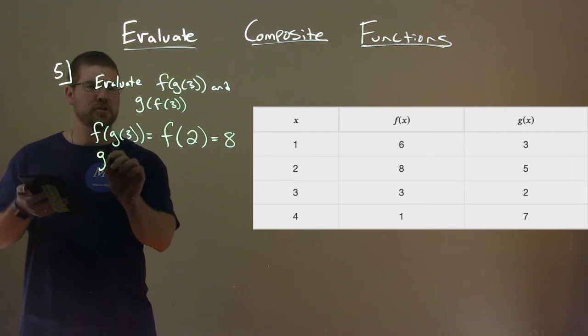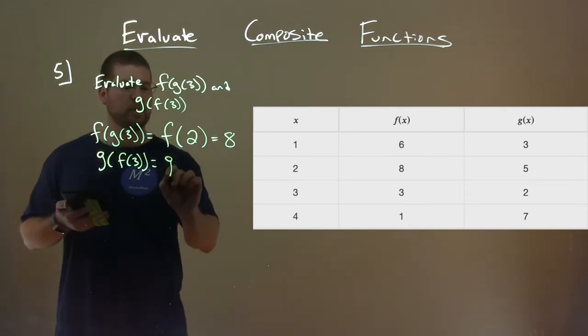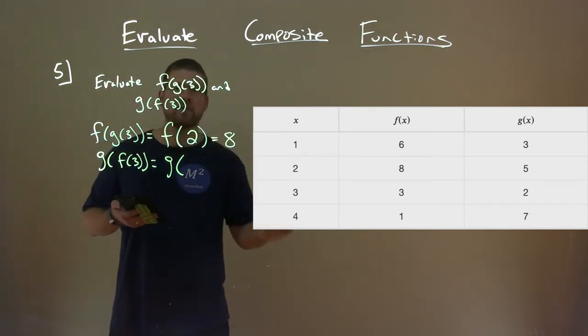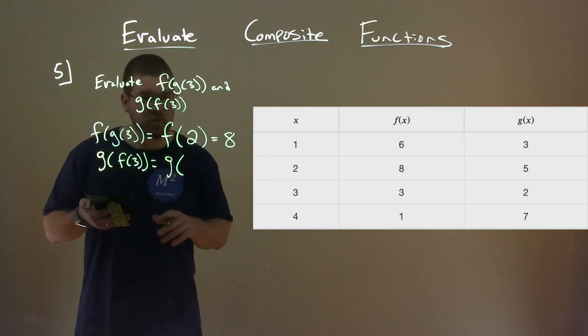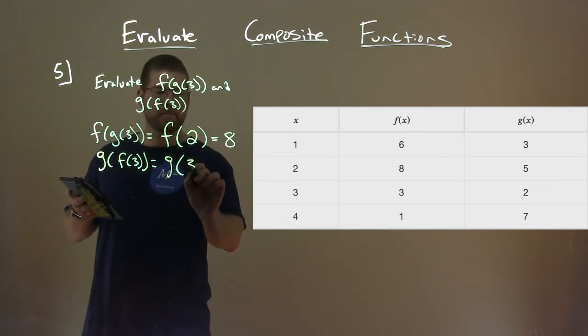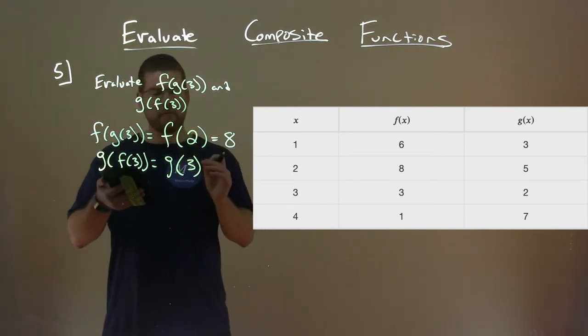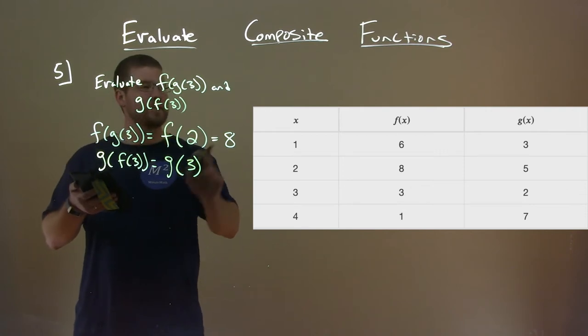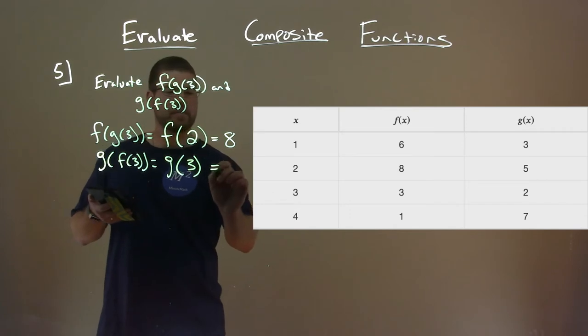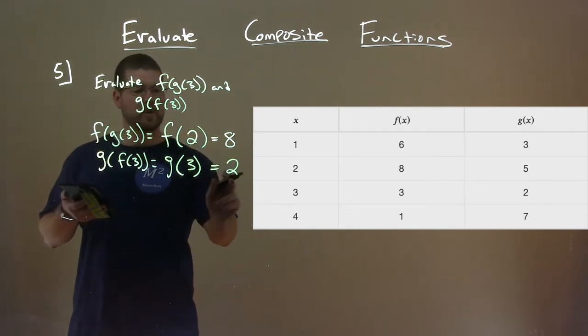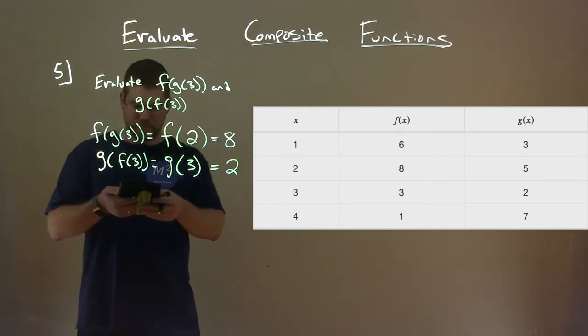So evaluate the next one, g of f of 3. So what we're going to do is find what's f of 3. When x is 3, what's the f of x value? And that is also 3 as well. So we have g of 3 right there. Then from there, 3 is a new input, 3 is on the x value, the x column. What is it for g of x? It's 2. So g of 3 is 2, so g of f of 3 is 2 right there.